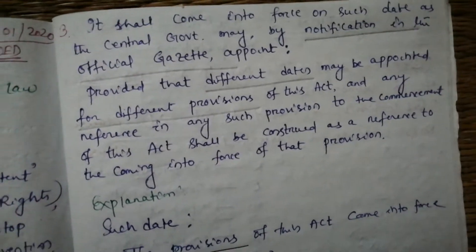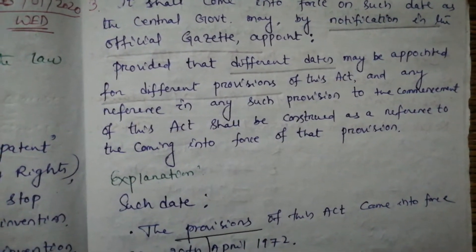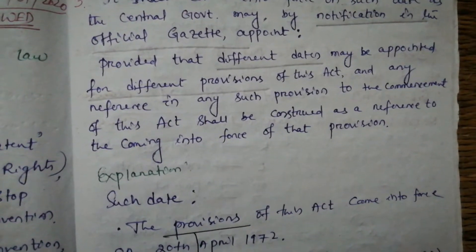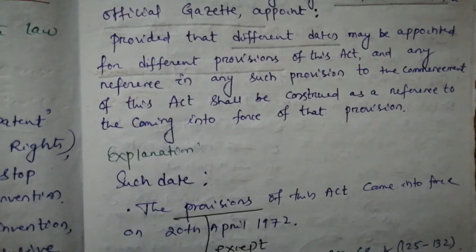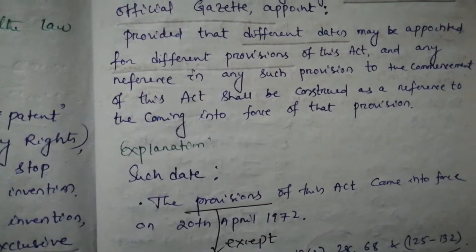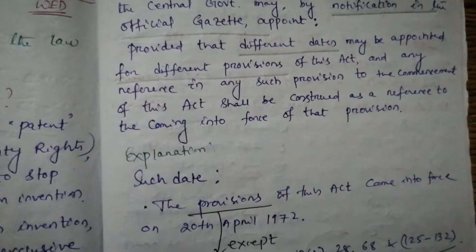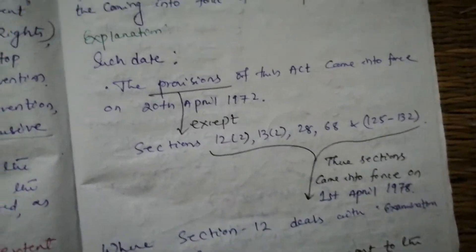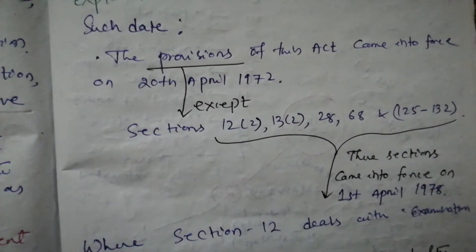Subsection 3 says: it shall come into force on such date as the central government may, by notification in the official gazette, appoint; provided that different dates may be appointed for different provisions of this act, and any reference in any such provision to the commencement of this act shall be construed as a reference to the coming into force of that provision. That means notification in the official gazette is the most important point. As an explanation, the provisions of this act came into force on 20th April 1972.